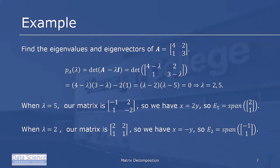When we go back to our matrix A minus lambda I with lambda equals 5, we get the matrix [[-1, 2], [1, -2]]. This tells us that x equals 2y, so E5 is the span of the vector [2, 1]. When lambda equals 2, we get the matrix [[2, 2], [1, 1]], and here we see that x must equal negative y, so E2 is the span of the vector [-1, 1]. These two eigenspaces, E5 and E2, are one-dimensional, each spanned by a single vector. However, in other cases we might have multiple identical eigenvalues, and the eigenspaces may have more than one dimension.